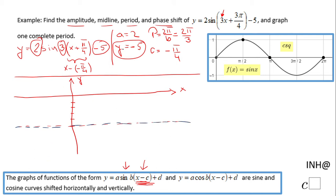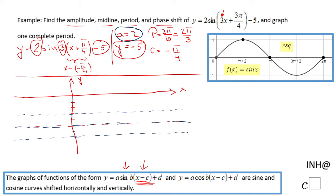With an amplitude of two, the graph goes two units up from the midline, reaching y equals negative three at its maximum, and two units down to y equals negative seven at its minimum. The sine function will oscillate between these two horizontal lines.